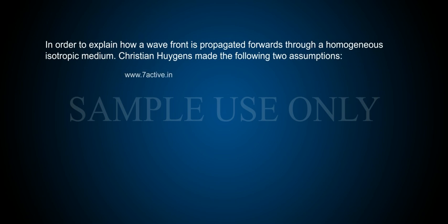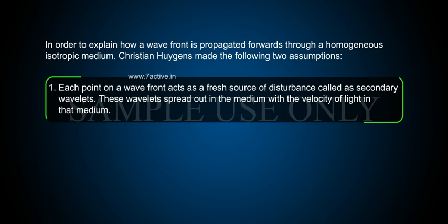Christian Huygens made the following two assumptions. First, each point on a wavefront acts as a fresh source of disturbance, called as secondary wavelets. These wavelets spread out in the medium with the velocity of light in that medium.